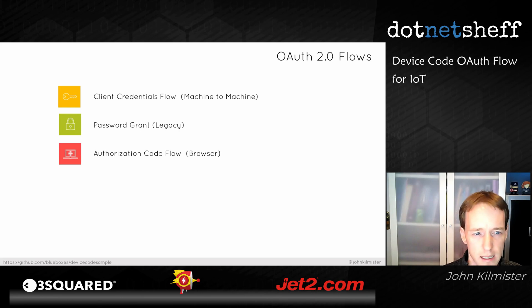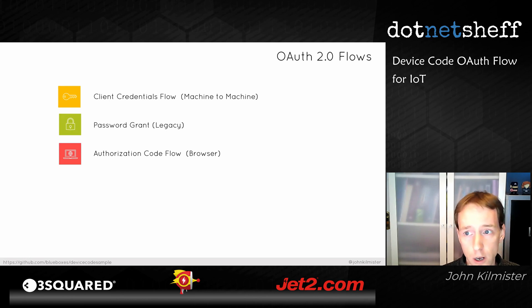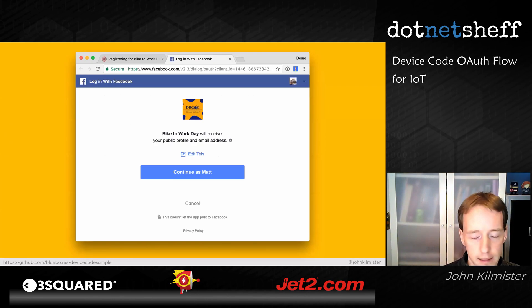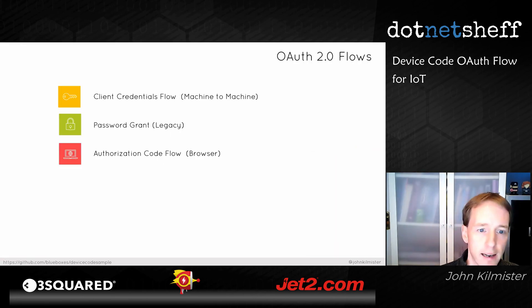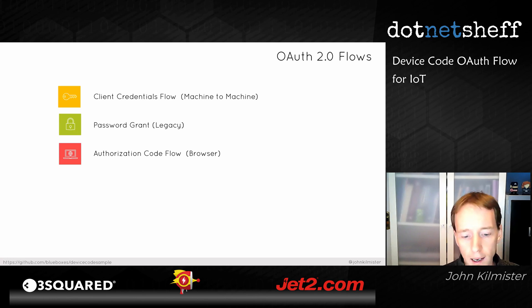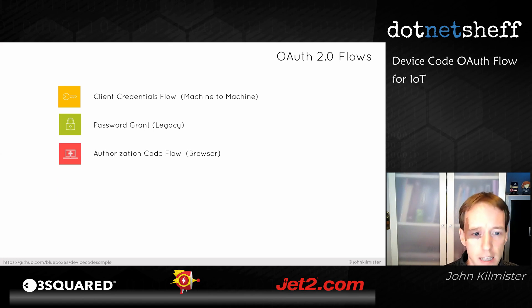The next one is probably the most familiar as an end user — it's called authorization code flow. Your application in the web browser triggers a flow which redirects the user off to another website. The Facebook example is the classic one: the web app redirects you, the person enters their credentials on the Facebook site, and once that's done the application gets the token. The problem is that you require a browser, and if you're writing a Windows service you may not have access to one — and that's where device code comes in.